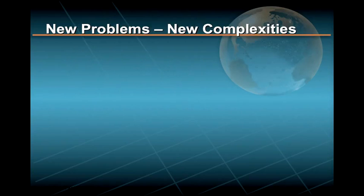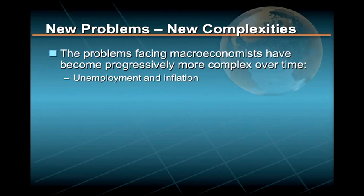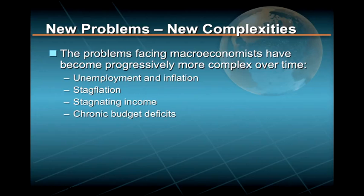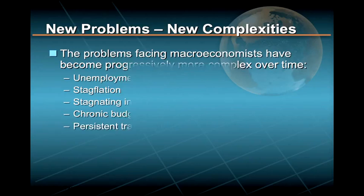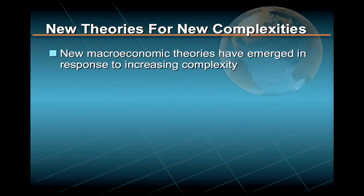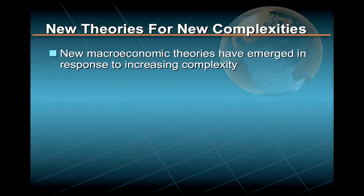In the remainder of this first lesson, we'll briefly define macroeconomics and then identify key policy issues. Once we do that, we'll move into a short macroeconomic history by first introducing classical economics, a school of thinking that macroeconomists around the world relied heavily upon from the late 1700s right up until the Great Depression of the 1930s. Beginning with the Great Depression, we will see that the problems facing macroeconomists became progressively more complex — from unemployment and inflation to stagflation, stagnating income, and chronic budget and trade deficits. New macroeconomic theories emerged in response: Keynesianism in the 1930s, monetarism in the 1970s, supply-side economics in the 1980s, and new classical economics in the 1990s.